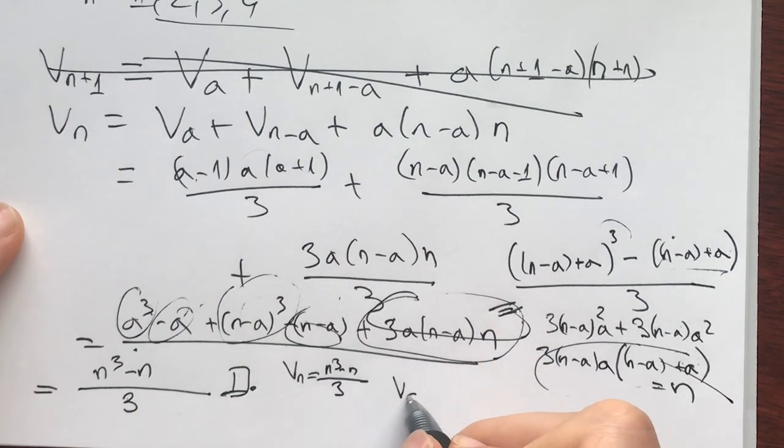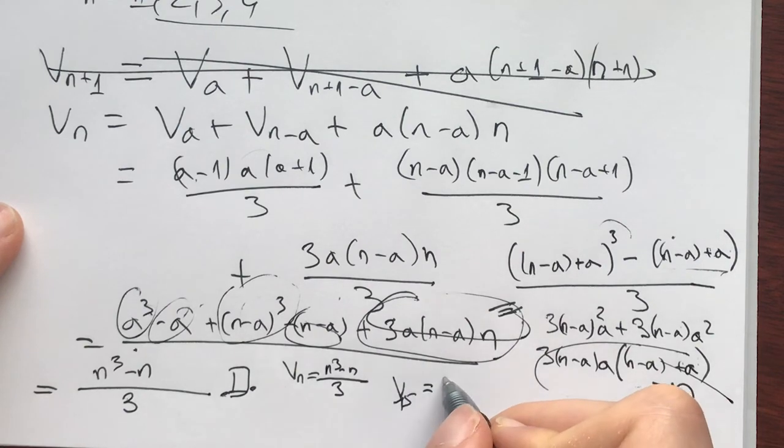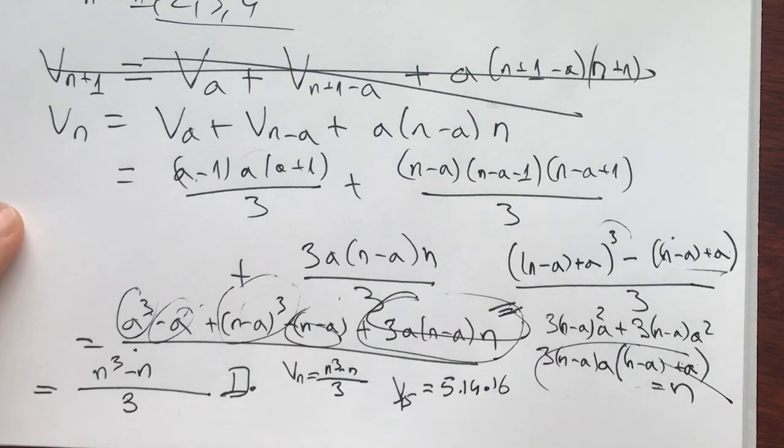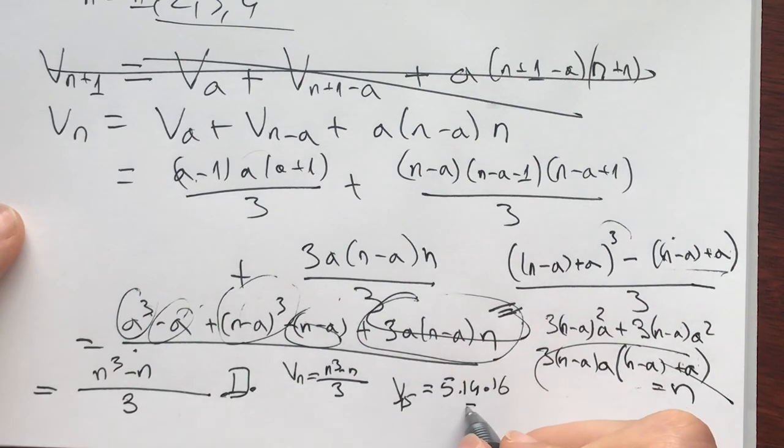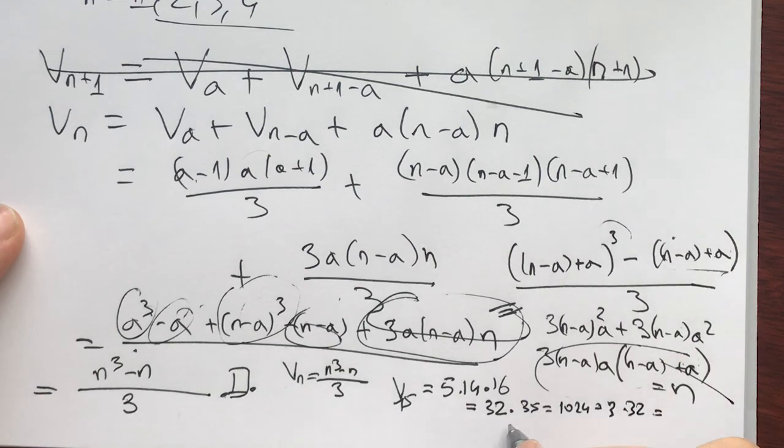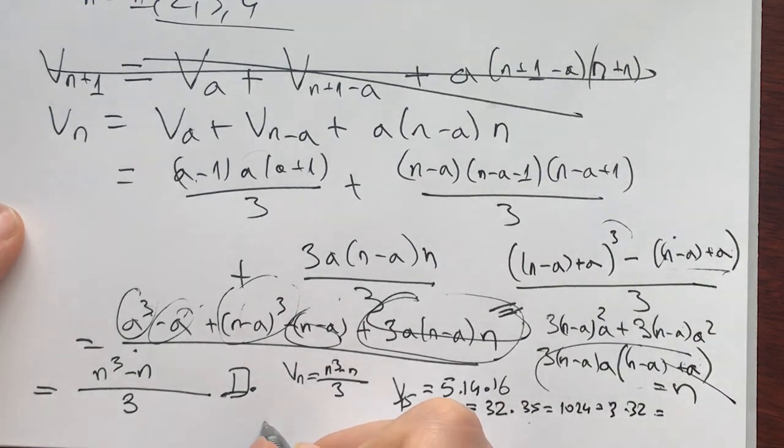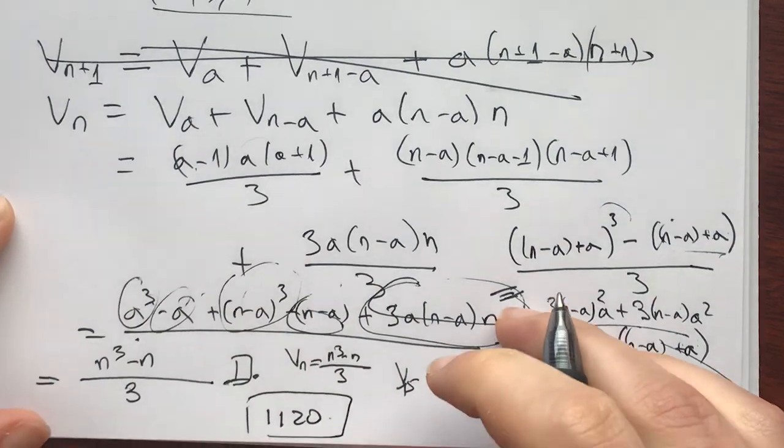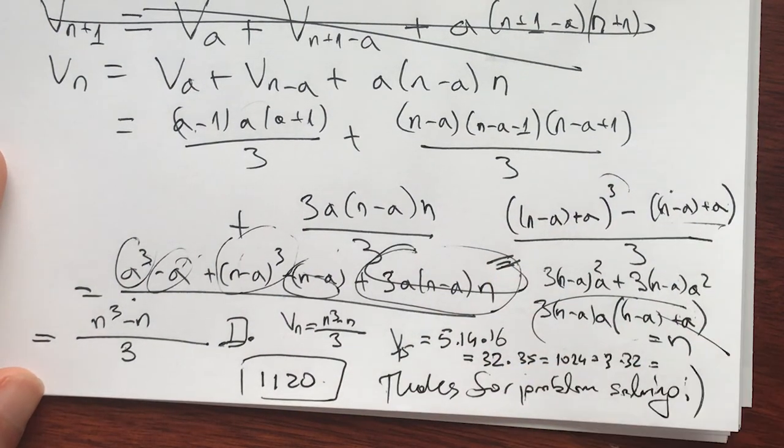And now V15 is going to be equal to what? It's going to be 5 times 14 times 16. And this is equal to, well, this is 32 times 35, which is 1024 plus 3 times 32, which is equal to 1120. So that's our answer. And as always, thanks for problem solving.